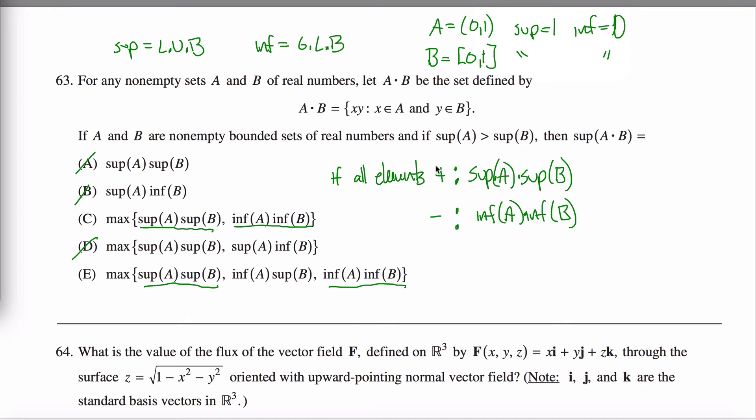So up here, they both only contain positive numbers. Down here, they only contain negative numbers. But what if one contains only positive and one contains only negative?